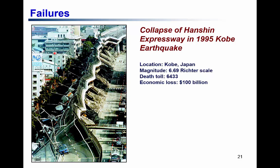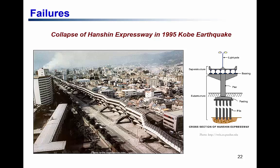Let us look at how concrete structures can fail. This iconic picture shows the failure of the Hanshin Expressway in the Kobe earthquake in Japan. A large portion of this expressway collapsed during the earthquake. One reason attributed to the collapse is soil-structure interaction during the earthquake — the soil, piles, and structure interacted in ways that were not accounted for in the design. The Kobe earthquake marked a significant transition in the Japanese design code.